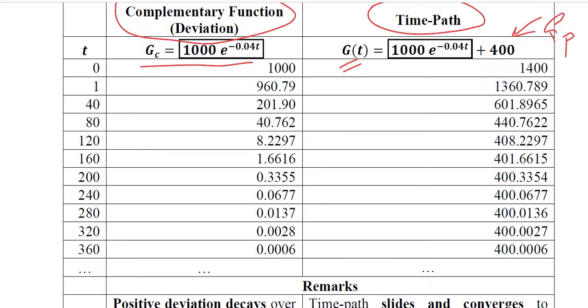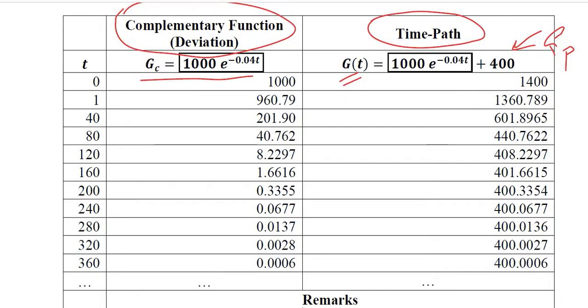This is a little bit of calculation that you can easily do, and the finding is that this value is decreasing. We have taken the values of t with certain gaps—1, then 40, and 80. We have taken a substantial gap of 40, and the reason is that the decline is now more visible.